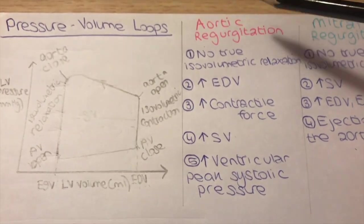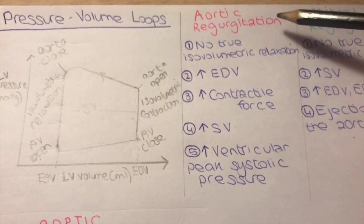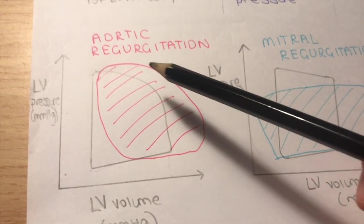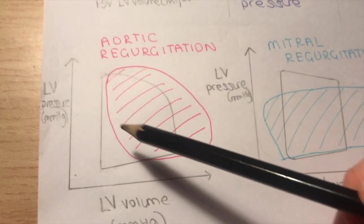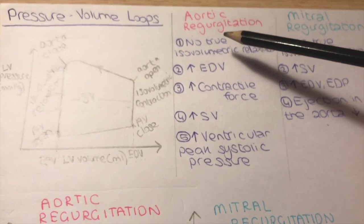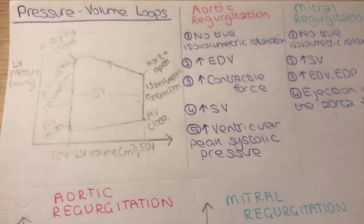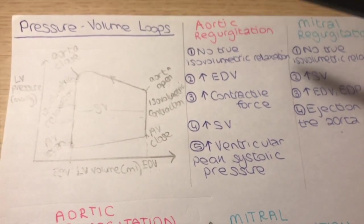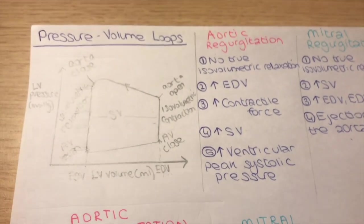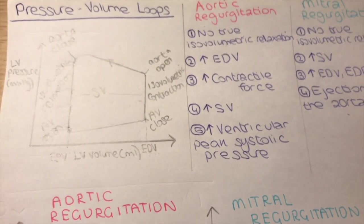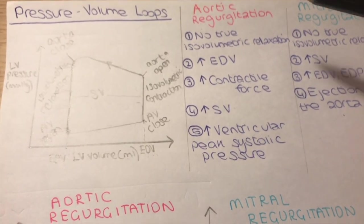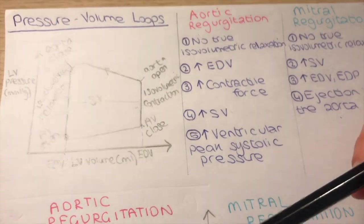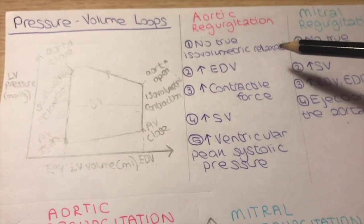Moving on to the pathologies, we'll start with aortic regurgitation. This is what the pressure-volume loop looks like in aortic regurgitation. Aortic regurgitation is basically when the aortic valve is not able to close completely, which causes back flow of blood from the aorta into the left ventricle — which is not supposed to happen.